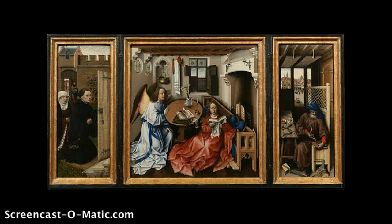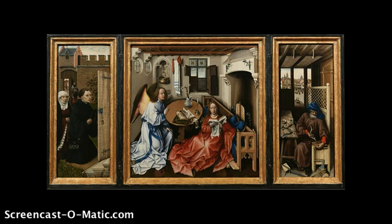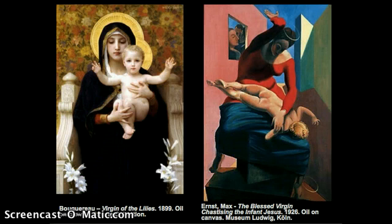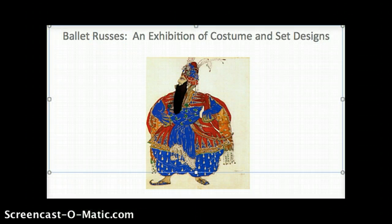In-class presentations begin with a group project on the historiography of Robert Campin's Merode Altarpiece. Next is a hypothetical information literacy session related to a real assignment requiring art information. And the third in-class presentation is a digital exhibition, such as this one on costume and set designs for the Ballets Russes.